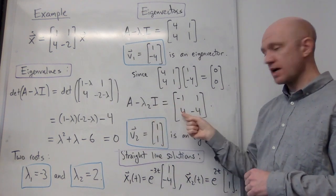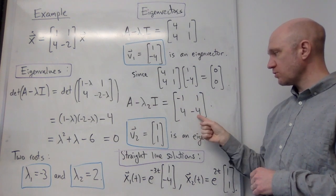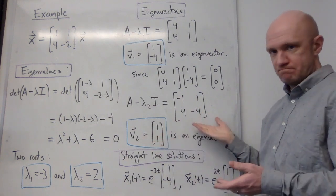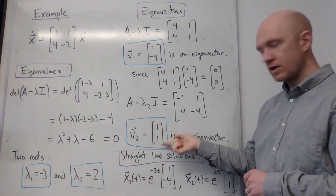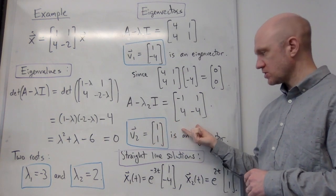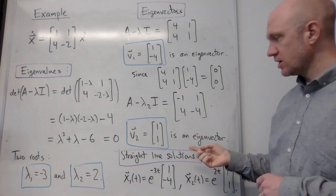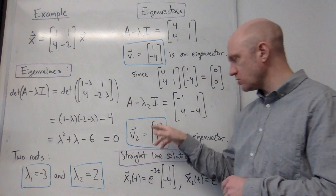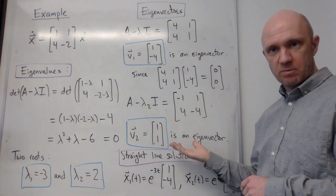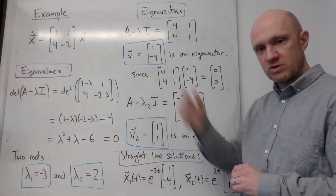Great, let's do the other one. A minus lambda 2 I. That's minus 1, 1, 4, minus 4. And stare at it for a minute and you see that, for example, this vector 1, 1 will be in the kernel of this matrix. So I found another eigenvector and this time this eigenvector pairs up with lambda 2. So the pair lambda 2 equals 2 and v2 is 1, 1. That's an eigenvalue, eigenvector pair, again, for this matrix A.